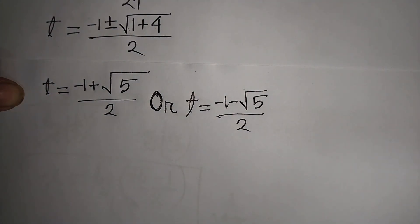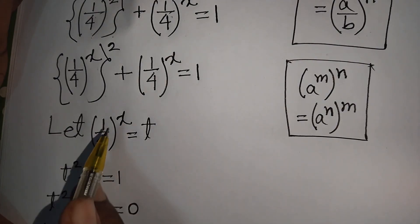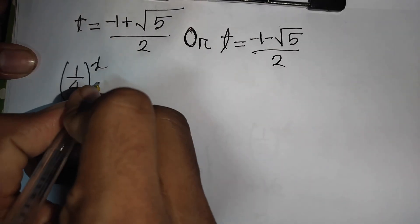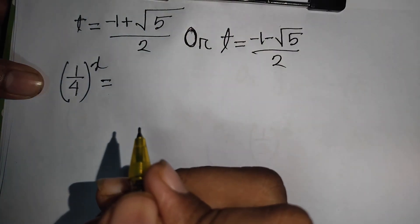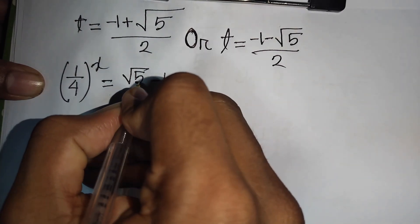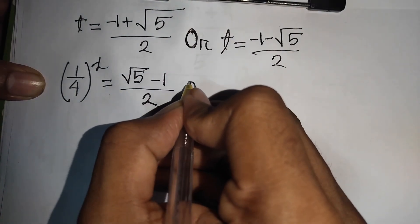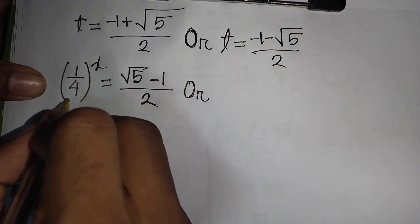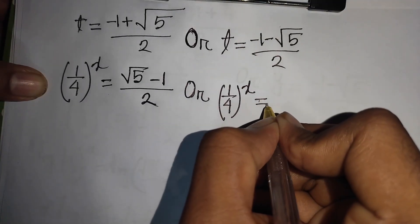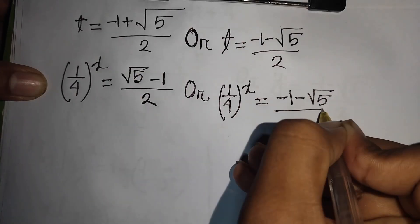Remembering that we let (1/4)^x equal t, we back-substitute. So (1/4)^x equals (√5 minus 1)/2 for the first case, and (1/4)^x equals (minus 1 minus √5)/2 for the second case. Since (1/4)^x must be positive, the second case is rejected.